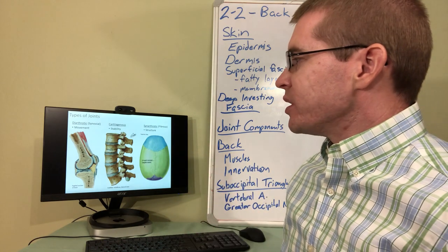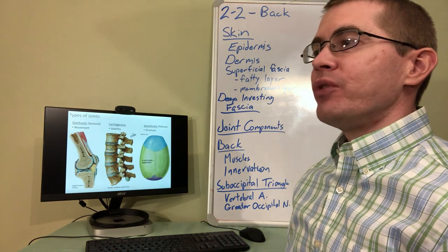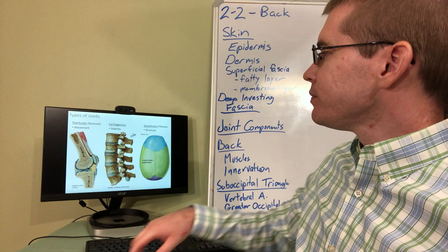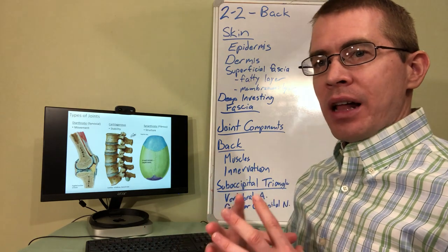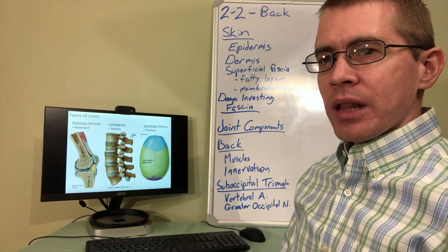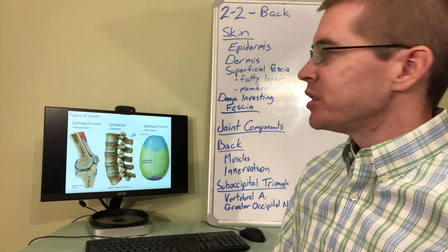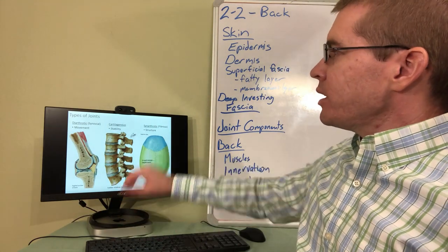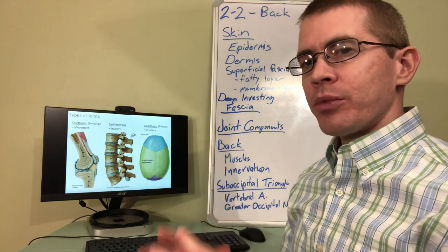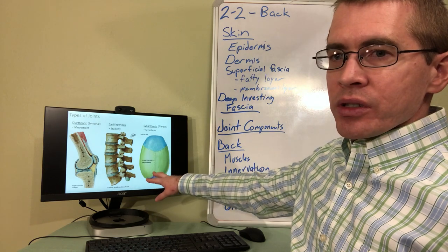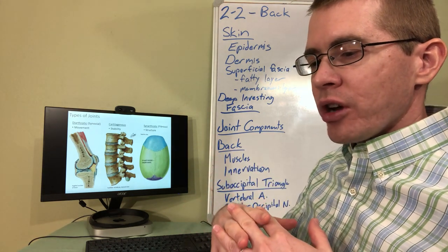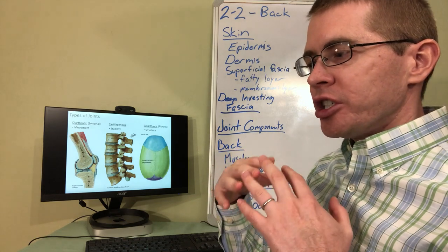These diarthrotic joints contain synovial fluid within them and their main purpose is to facilitate movement, such as in the shoulder, elbow, and leg joints. There are also cartilaginous joints, which are more solid, allow for less movement, and are more structural — though some movement is allowed. We'll see these types of joints in the vertebral column, particularly between the vertebrae. Finally, there are fibrous joints or synarthrotic joints — structural joints that form during the developmental process, such as the suture joints in the skull, where fibrous tissue connects over the bones as they grow close together.